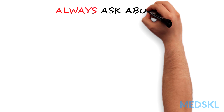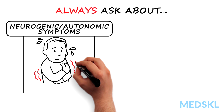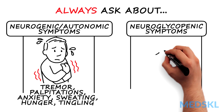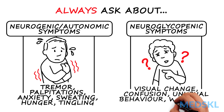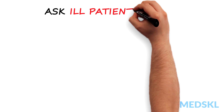Always ask about neurogenic autonomic symptoms such as tremor, palpitations, anxiety, sweating, hunger, and tingling, and neuroglycopenic symptoms such as visual change, confusion, unusual behavior, weakness, seizure, and coma.